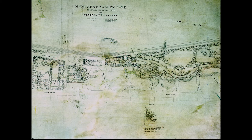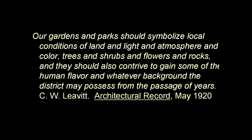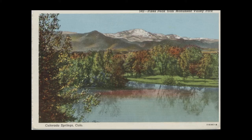Lovett, who designed the park, said that our gardens and parks should symbolize local conditions of land and light and atmosphere and color, trees and shrubs and flowers and rocks, and they should also contrive to gain some of the human flavor and whatever background the district may possess from the passage of years. I think this is significant because Palmer, as an incredible naturalist, had as one of his goals for Monument Valley Park to have one of every tree and shrub found in Colorado in the park, so that people who moved here could see what grew here naturally and hopefully plant similar plants.